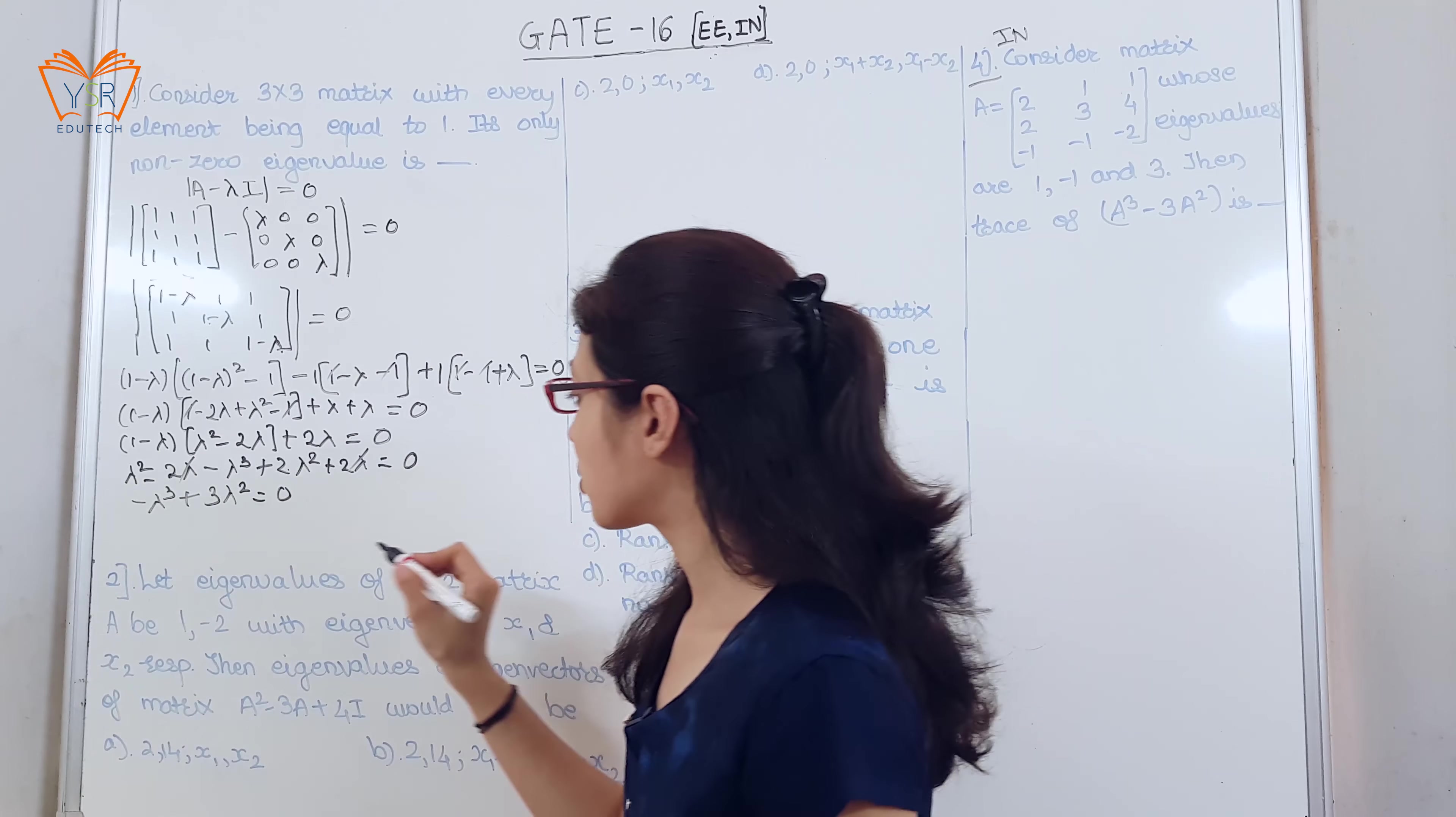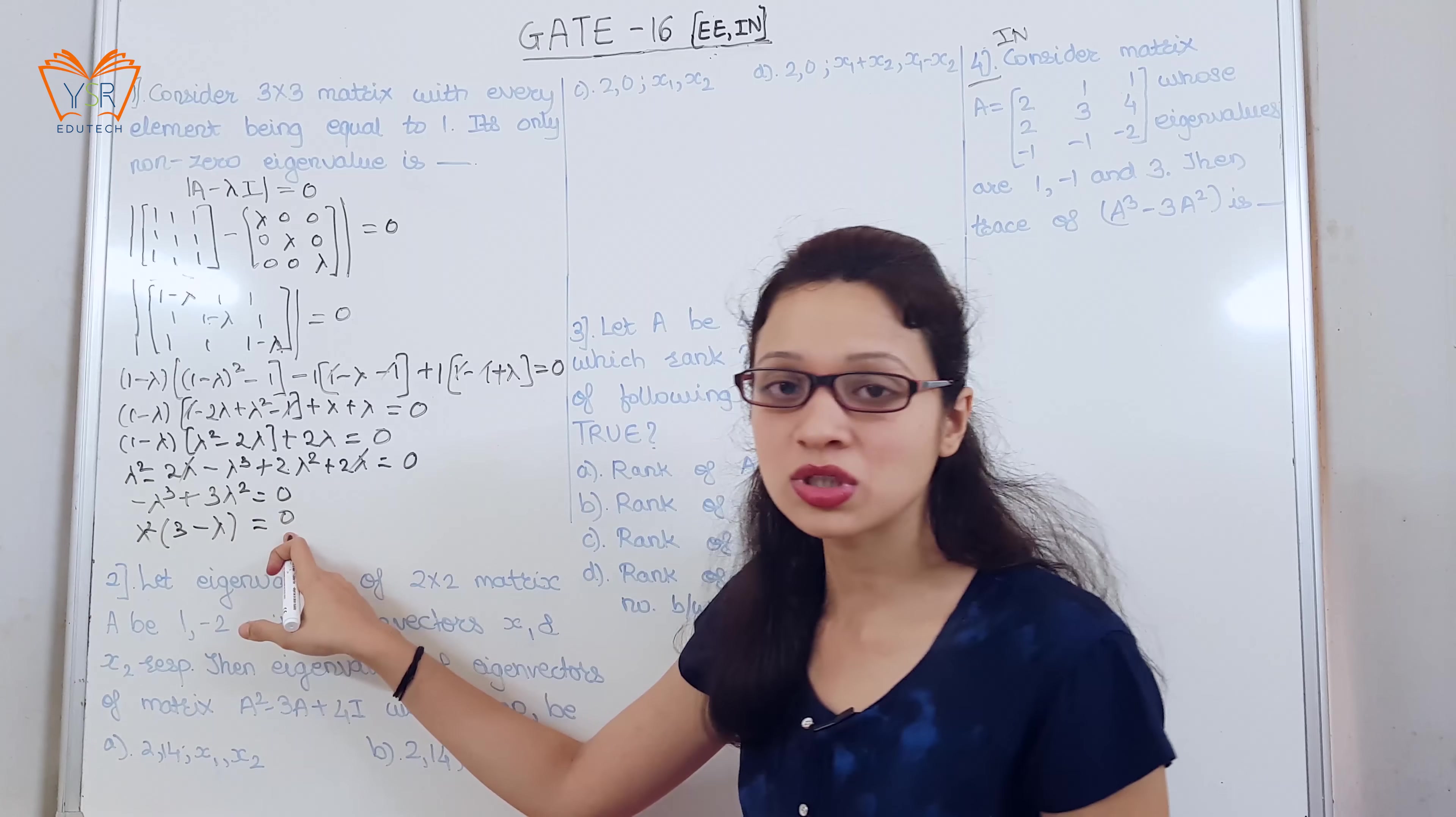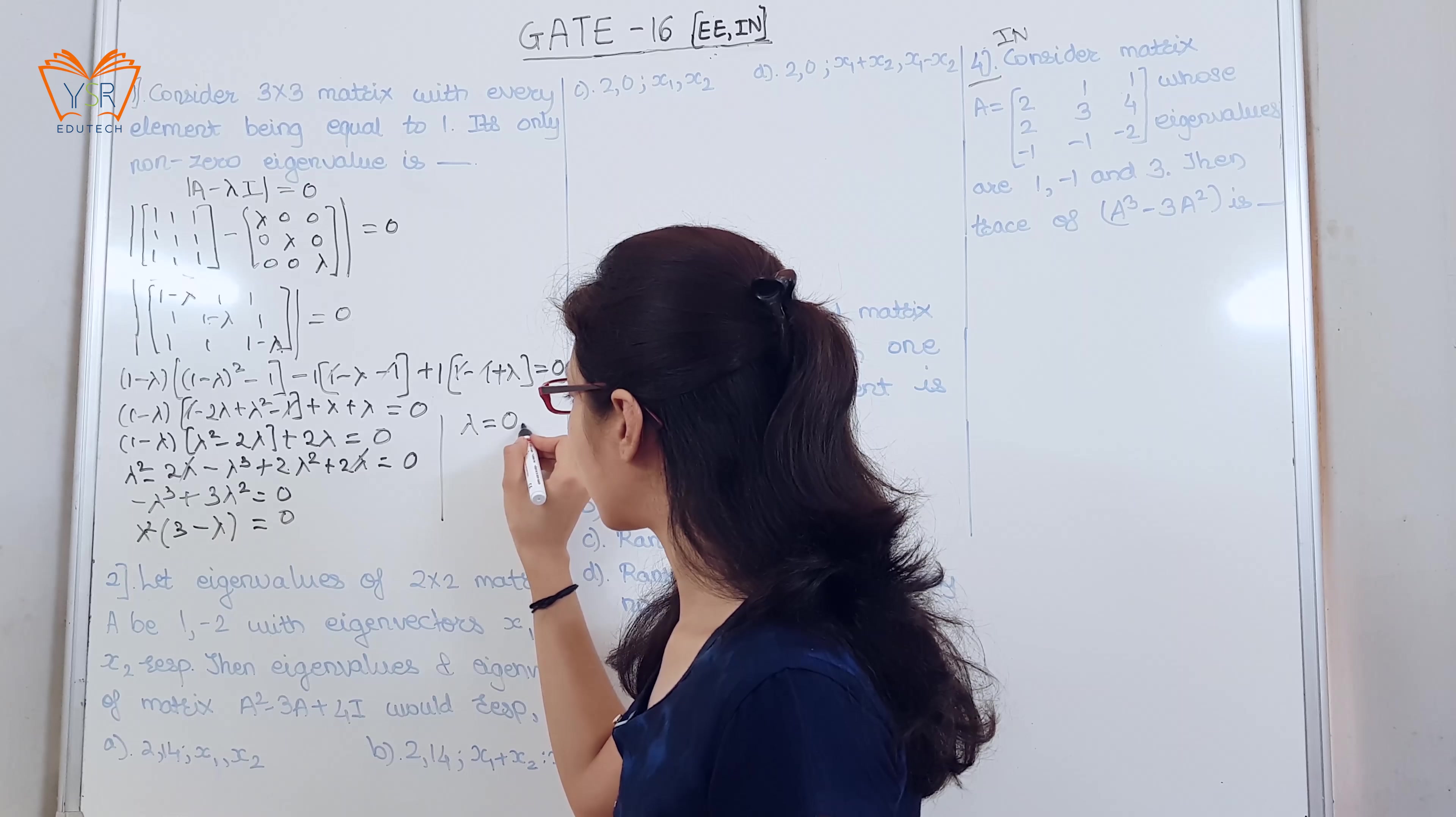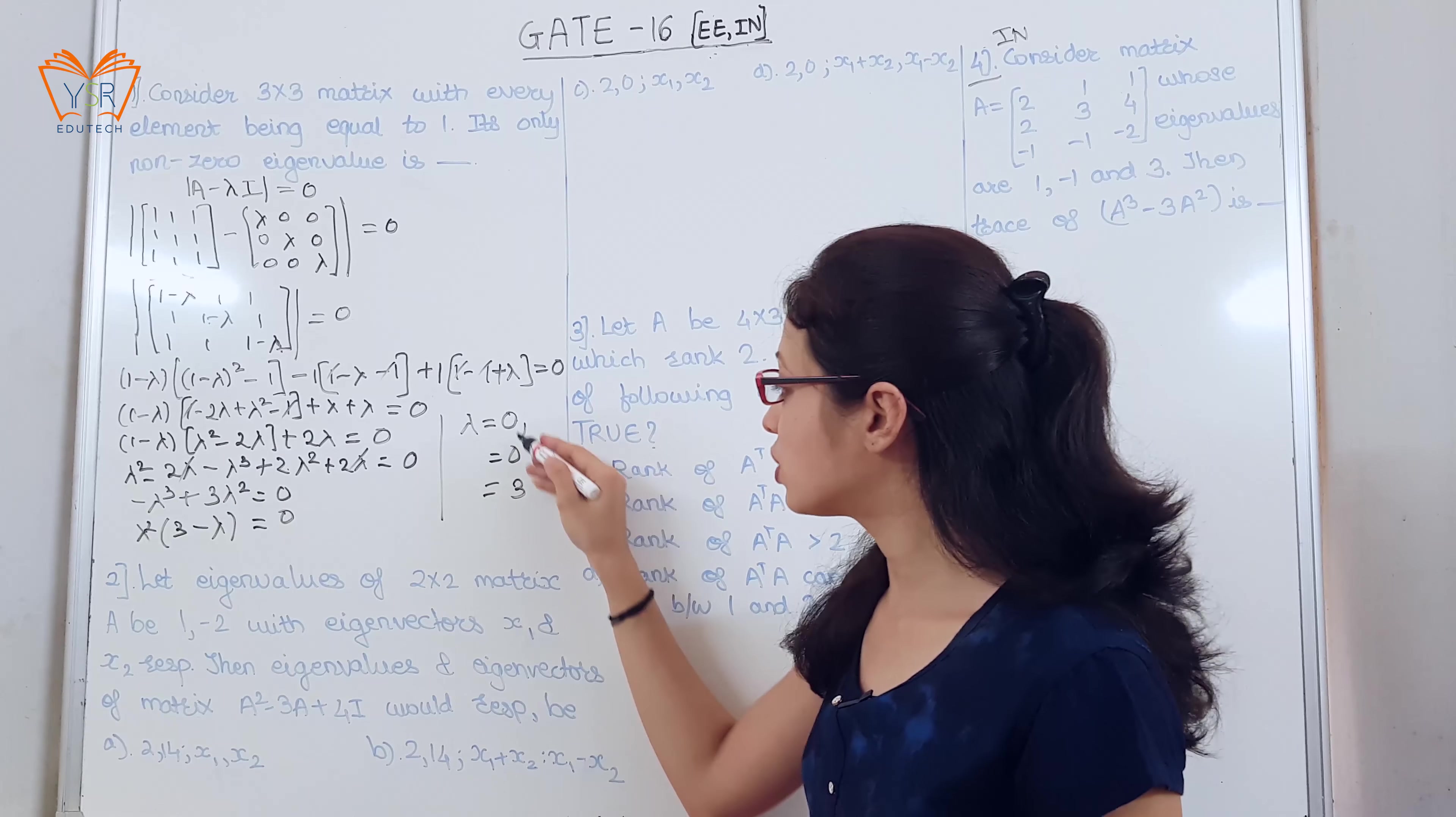Cancel this we get minus lambda cube plus 3 lambda square is equal to 0. Taking lambda square common we get lambda square 3 minus lambda is equal to 0. Since lambda square is equal to 0 the values are lambda is equal to 0 and lambda is equal to 0 and lambda is equal to 3. So, the 3 eigenvalues are 0, 0, 3.